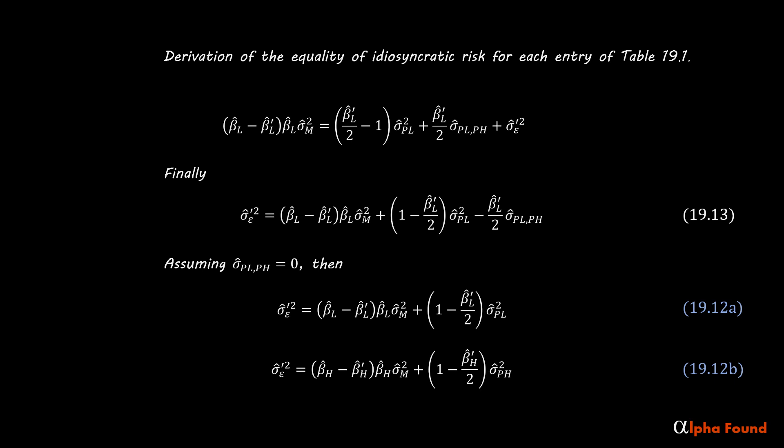You can now see with precision the differences between perturbation risk and idiosyncratic risk. Both formulas in 19.12a and 19.12b give the same answer for idiosyncratic risk for every entry in Table 19.1. Yet the perturbation risks are different for every entry of Table 19.1.